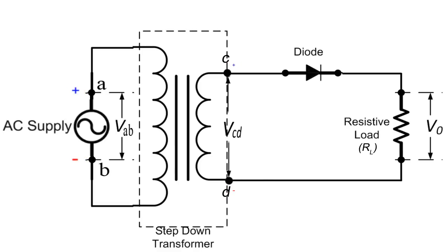During positive half cycle, the terminal C becomes positive and terminal D is negative. Under this condition, the diode is forward biased, which we can see here. The anode is at higher potential with respect to cathode.